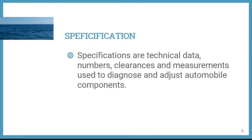Specifications are technical data — numbers, clearances, and measurements used to diagnose and adjust automobile components. Specifications are included as part of the service manual and are considered precise measurements under standard conditions. Examples of specifications include valve clearances, spark plug gaps, tire pressure, number of quarts of oil, ignition timing, and engine size.